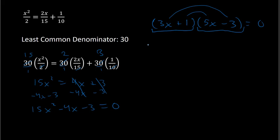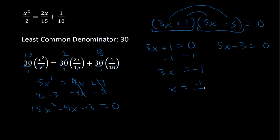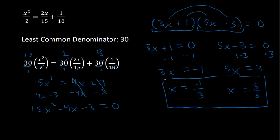Since one of these two expressions must equal 0, either 3x plus 1 equals 0 or 5x minus 3 equals 0. Solving the first: 3x equals negative 1, divide by 3, so x equals negative 1 over 3. For the second: 5x equals 3, divide by 5, so x equals 3 over 5. So I have two answers: x equals negative 1 third or x equals 3 over 5. And that concludes our lesson for today. We will see you next time.